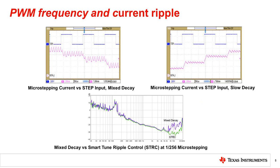If the PWM frequency falls within the audible band, the noise associated with the PWM frequency will be audible. Increasing the switching frequency is the first method to reduce audible noise. To reduce the ripple and therefore audible noise, a stepper motor should operate with a minimized ripple current. Comparing with mixed decay or other decay modes, slow decay can have a smaller ripple current, as shown in the top of this slide.